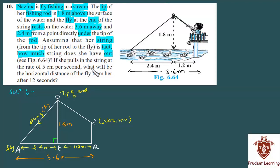Assuming that her string from the tip of her rod to the fly is taut, how much string does she have out? This is the first part. Let me first understand the setup. This is a water stream with fish. Najima is trying to catch these fish. The fishing rod has a string tied to it. One end is in Najima's hand where the string length can be adjusted, and the other end has a fly attached. The fishing rod's topmost point is 1.8 meters above the water surface. The fly distance is 2.4 meters, and the horizontal distance is 3.6 meters.